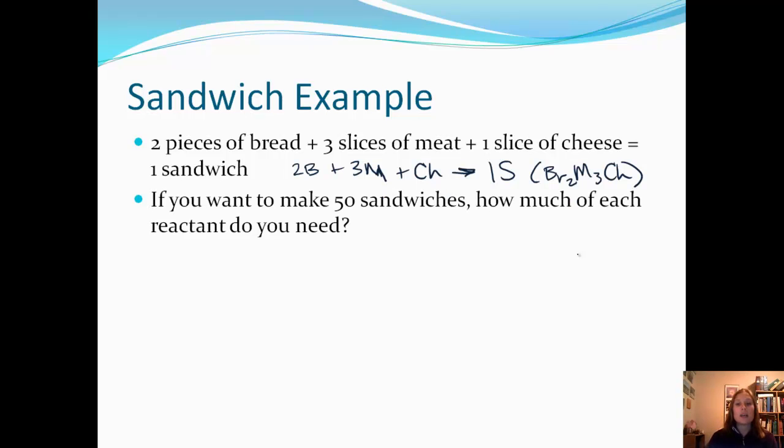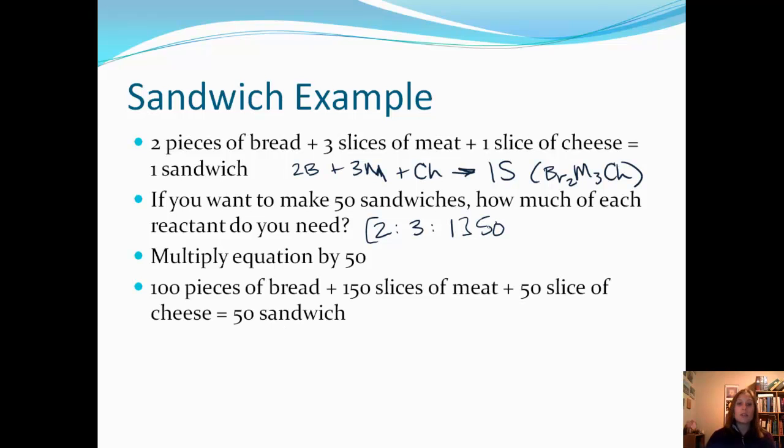What if we wanted to make 50 sandwiches? How much of each reactant would you need? Think about if this is the reaction for one sandwich, how do we decide how much stuff to buy if we want to make 50? Hopefully what you thought about is basically you're going to multiply this simple ratio of 2 to 3 to 1, and you're going to multiply that ratio by 50. That would end up giving you 100 pieces of bread, 150 slices of meat, and 50 slices of cheese to get 50 sandwiches, even though our ratio is the same. 100 to 150 to 50 is the same thing as 2 to 3 to 1.